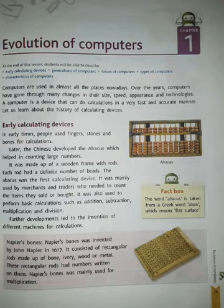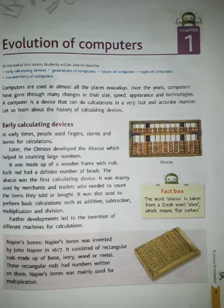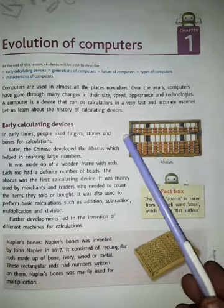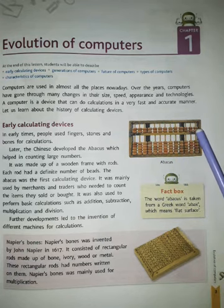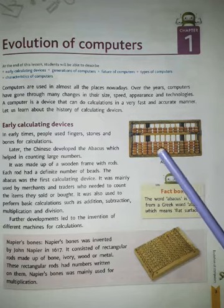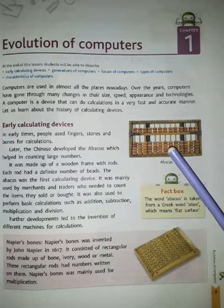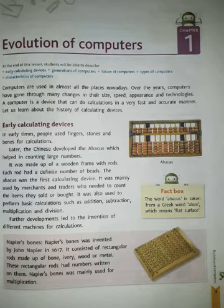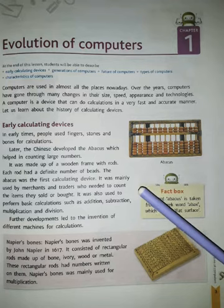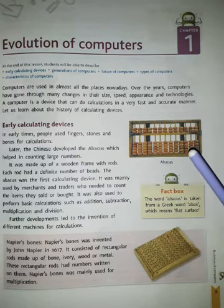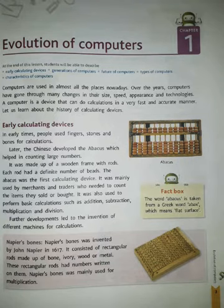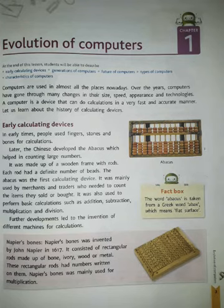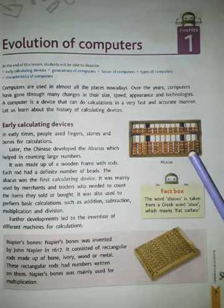After that, the Chinese people modified it and gave it the form of the abacus. You can see this is a wooden frame divided into two parts. In the first part, there are two beads on each string, and in the second part there are five beads. Their calculation using these beads was easy, and a skilled person can even calculate more quickly than a calculator. So this was the first calculating device.